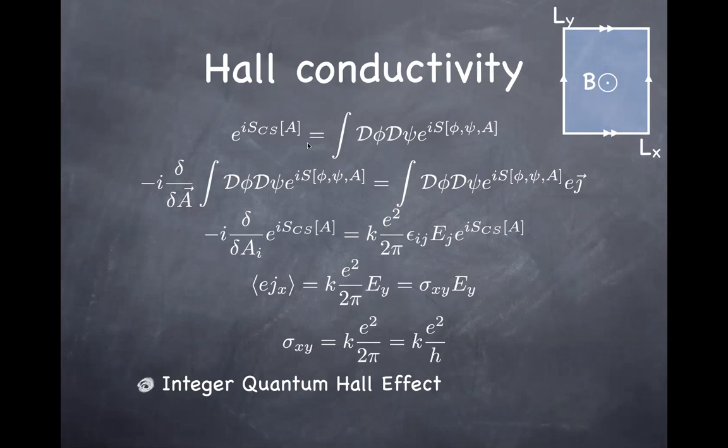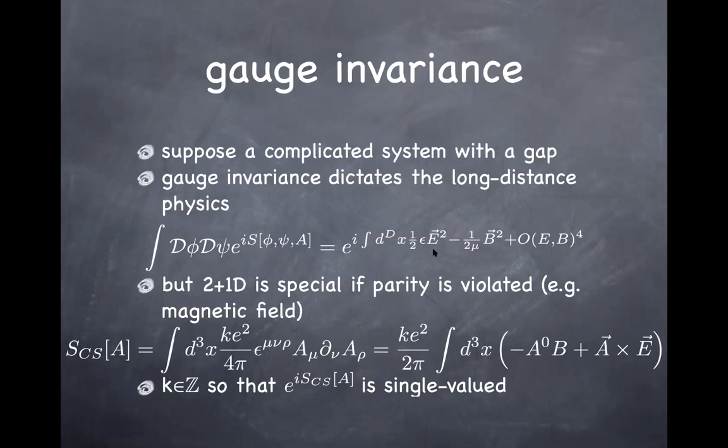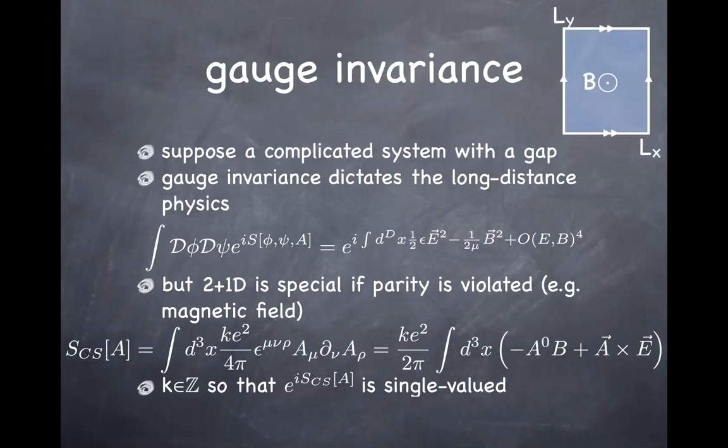Student: And other higher terms just don't dominate at long distances? That's right. If you have a system that doesn't break parity — like in the absence of a magnetic field — then you don't have the Chern-Simons term, and you look at whatever the lowest-dimensional operator is, which is typically E-squared or B-squared. But in the presence of the Chern-Simons term, it is much more important than higher-dimensional operators — that's why I'm only keeping the Chern-Simons term.